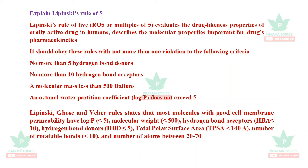Lipinski and Veber rules state most molecules with good cell membrane permeability should have log P less than 5, molecular weight less than 500 Daltons, hydrogen bond acceptors less than 10, hydrogen bond donors less than 5, total polar surface area (TPSA) less than 140 Angstroms, number of rotatable bonds less than 10, and number of atoms between 20 to 70.